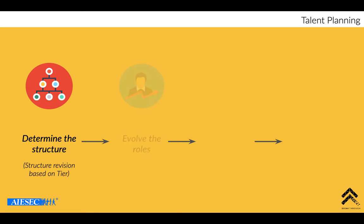After you get the structure very clear, the second thing you have to understand is how to evolve the roles. Summer peak and winter peak may be a bit different in terms of roles and also in terms of your JD. One thing to take note is that when you are evolving the roles, it's not only for members but can also be for team leaders. Winter peak is always the more challenging peak compared to summer peak for about 50% of LCs.